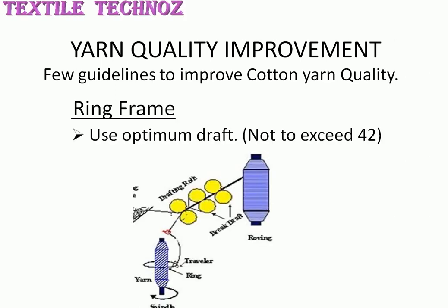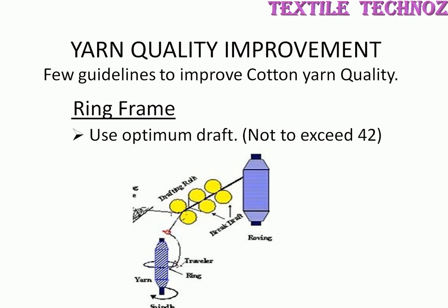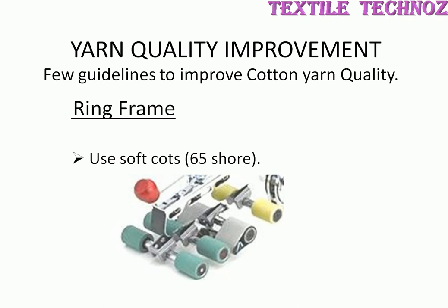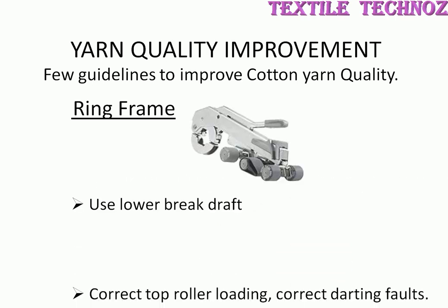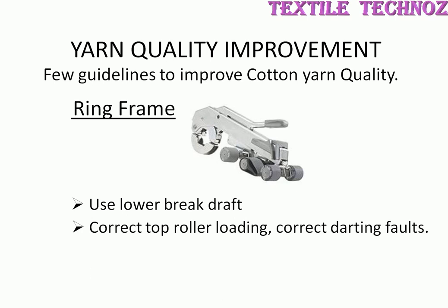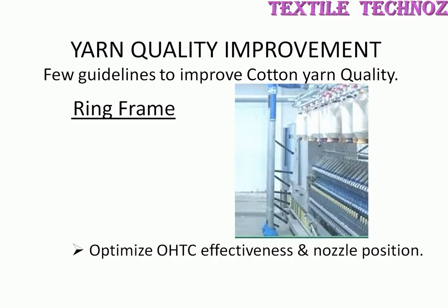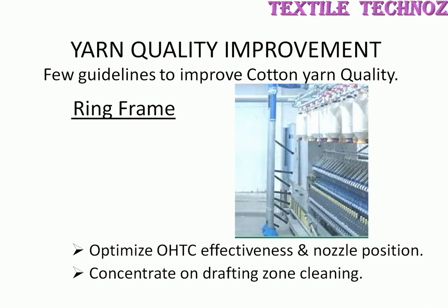In ring frame, use optimum draft — it should not exceed 42. Use soft quartz for cotton at 65 Shore hardness for better results. Use optimum spacer size; do not use too small or too large. Use lower break draft. Correct top roller loading and correct drafting faults, especially for pneumatic loading ring frames. Optimize overhead traveler cleaner effectiveness and nozzle positions to avoid unnecessary cuts in winding. Concentrate on drafting zone cleaning at all times.